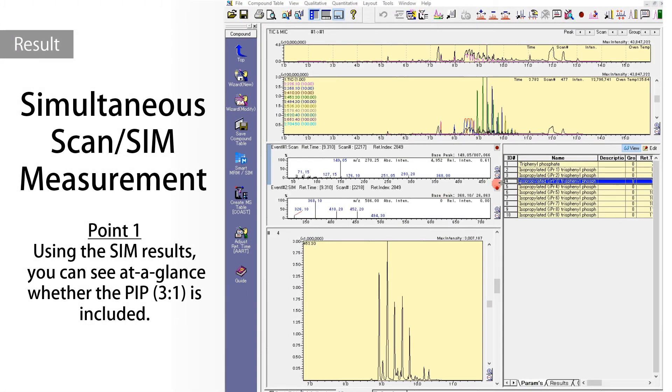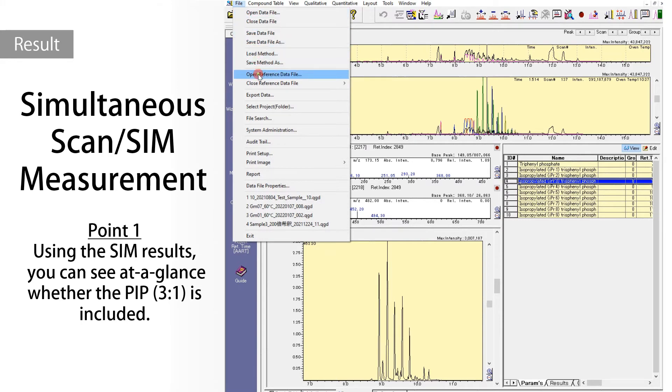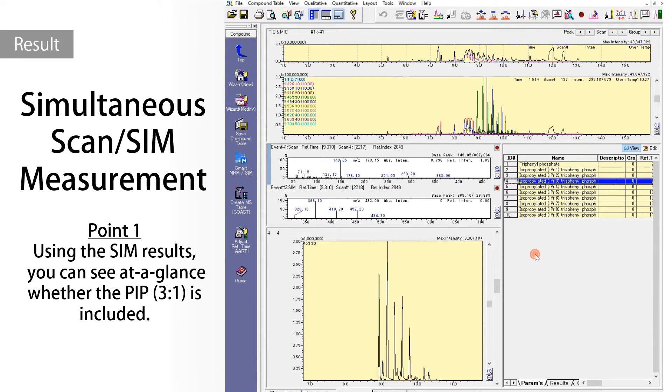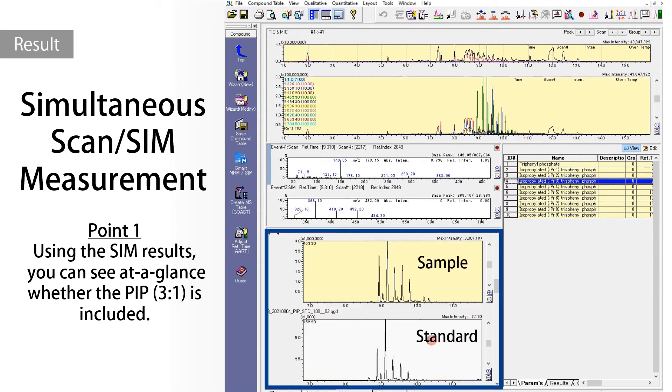This is the result of plastic sample included PIP-3-1. On some chromatogram, three isopropylated isomers, multiple peaks, are shown. The workstation for GC-MS can reference the standard chromatogram and display it under the plastic sample.